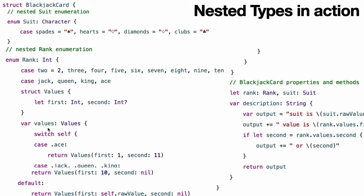Rank also defines a computed property Values, which returns an instance of the Values structure. This computed property considers the rank of the card and initializes a new Values instance with appropriate values based on its rank.